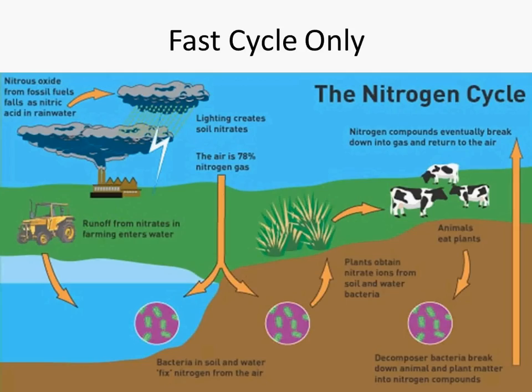Rain washes those nitrates back into the soil, and then plants can take those nitrates up. There's another way: the exposure of plant roots to nitrogen gases involves a symbiotic, mutualistic relationship between bacteria and the roots of the plants. It's this bacteria that is able to capture the nitrogen gases and turn those into solids so the plants can take them up.